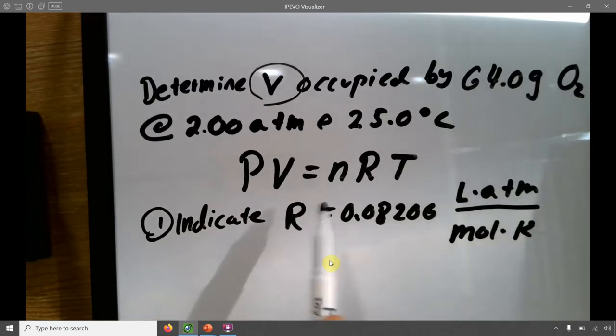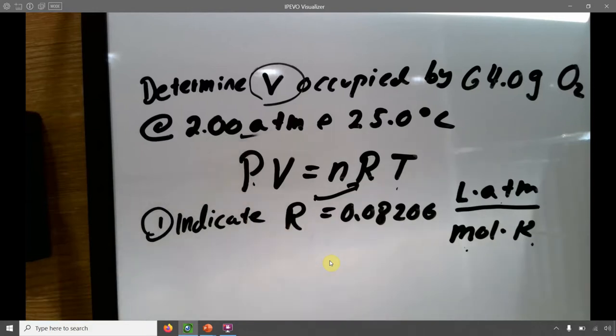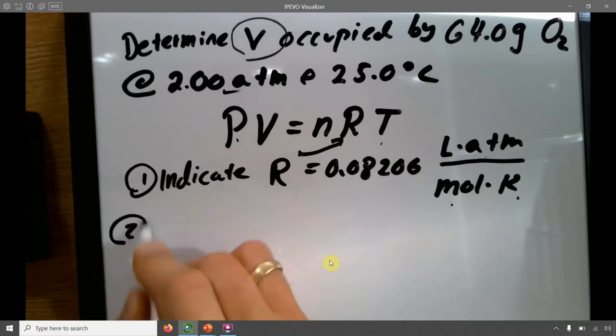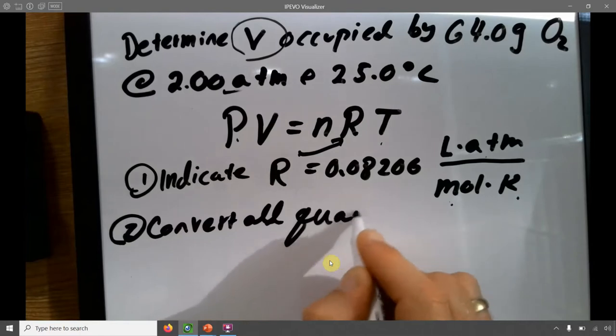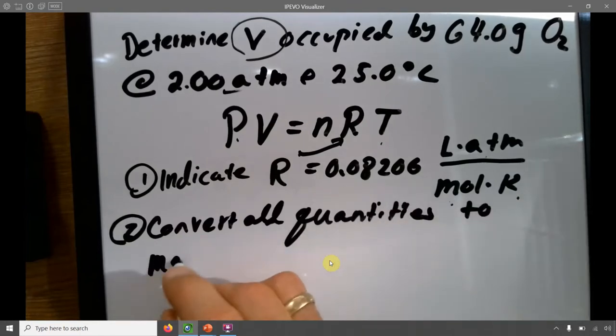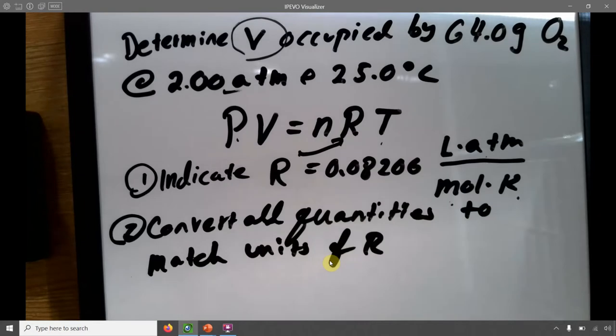First thing you want to do is indicate the R that you're going to use. Indicate R. So for us, it will be 0.08206. And I'm going to write the units to remind me what I need to work with. So before I use P because of my T, this R will go here. That's great. I need my n in moles. I need my T in Kelvin. I need my pressure in ATM. Well, that's nice. I got that. And then I'll get my volume as liters. Great. So I need to convert all quantities to match the units of R, which is why I'm saying pick it first. Because reduce the amount of conversions you need to do. If you don't have to do unit conversion, don't. Why would you want to do that for yourself?